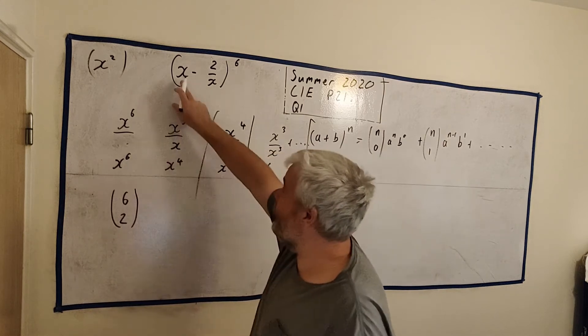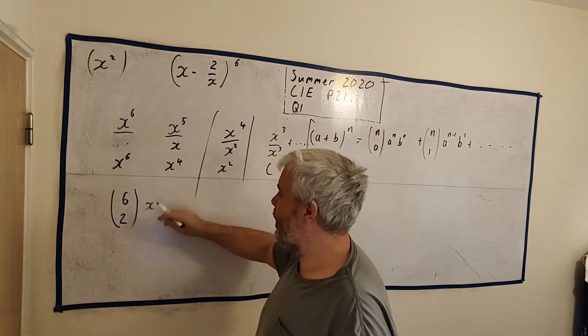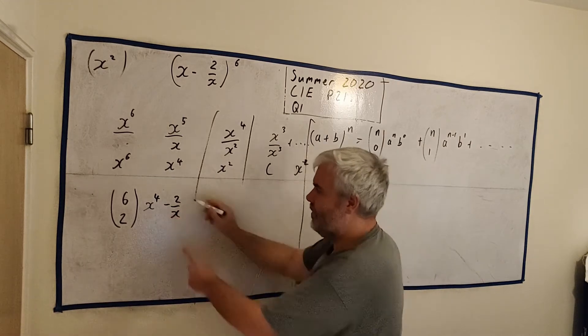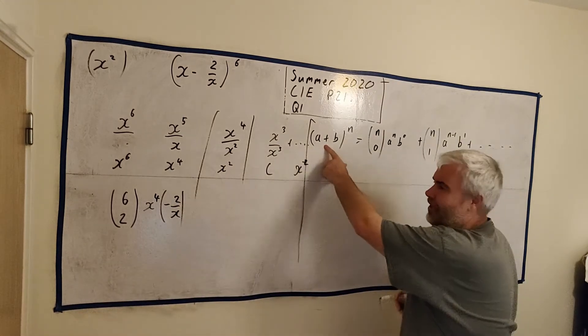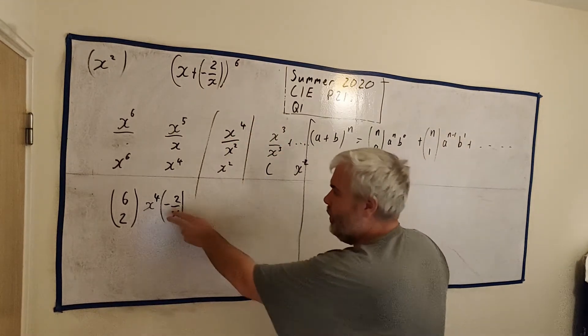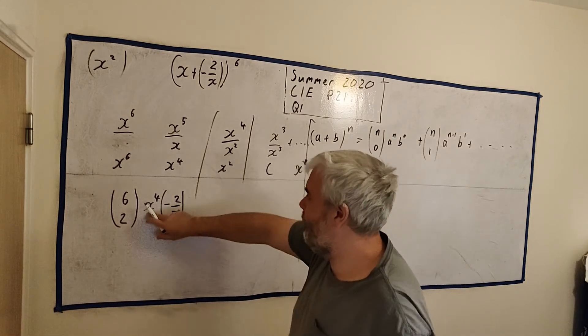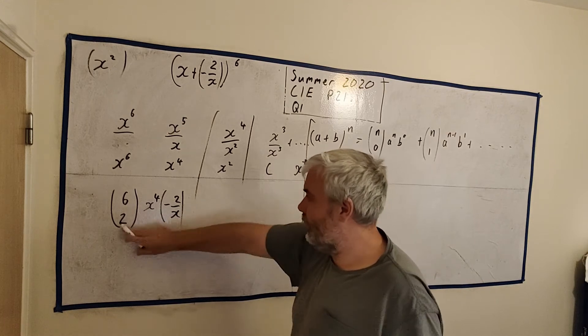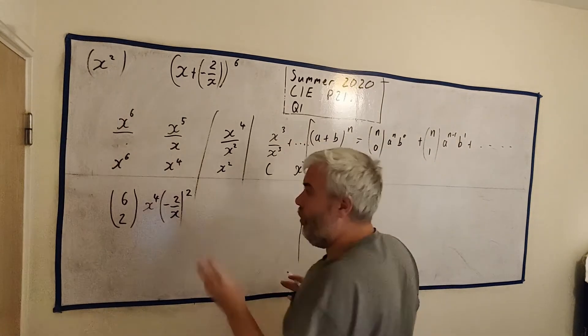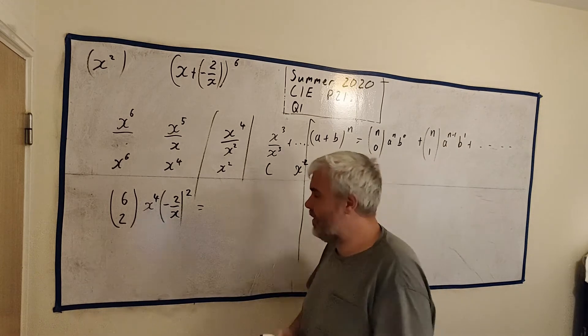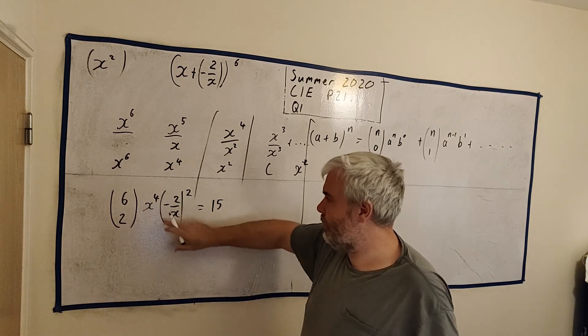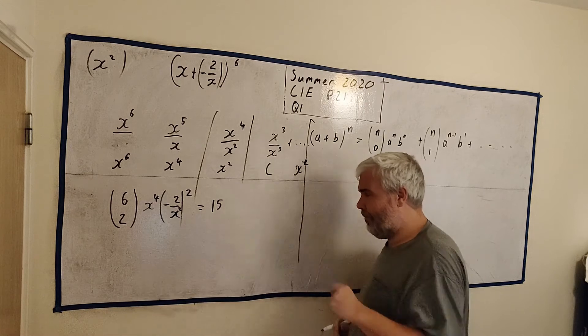6 choose 2, the first term to the power of, let's see, 6, 5, 4. And the next term, which is minus 2 over x. Don't forget the minus. In the binomial expansion, it has a plus in it. So if there's a minus here, this is really plus minus something. So we keep that minus in there. So it's x to the power of 6 minus 2. And it's this to the power of 2. And that's it. This is the x² term. We just do all this out. It's not as hard as it seems. We can put this on a calculator. It comes out as 15. And x⁴ multiplied by x² should be there. My apologies.